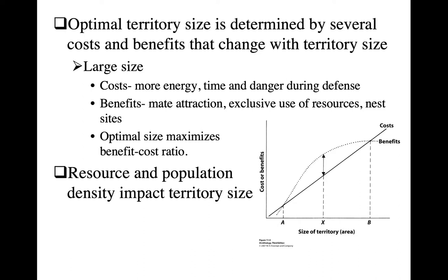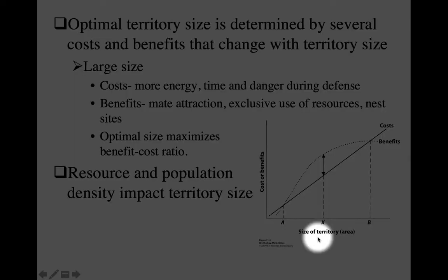How do you determine for a species what the optimal territory size is? It's kind of like a Goldilocks situation. You don't defend a territory that's too small — it doesn't have enough resources. But you also don't want to spend a huge amount of energy defending a massive territory, because there are more resources there than you actually need and the cost-benefit ratio won't work out. This graphical model helps figure out that sweet spot: on the x-axis is territory size, with associated cost and benefit lines.